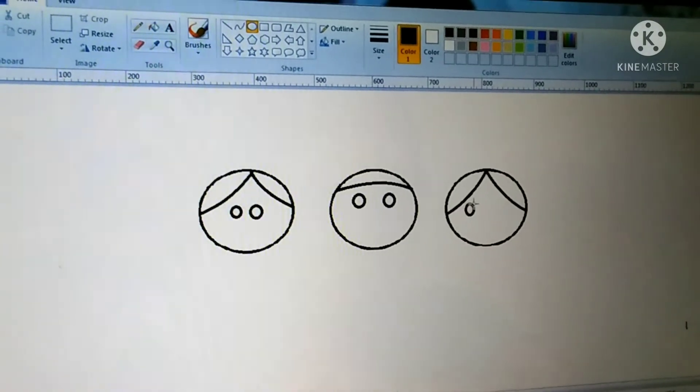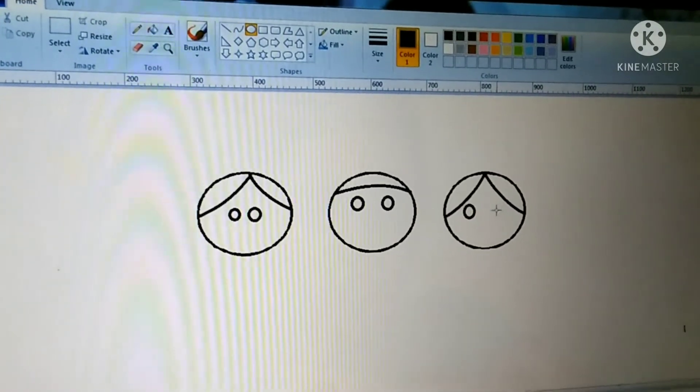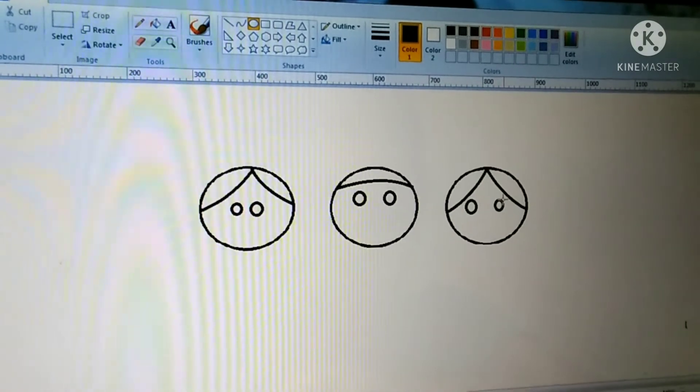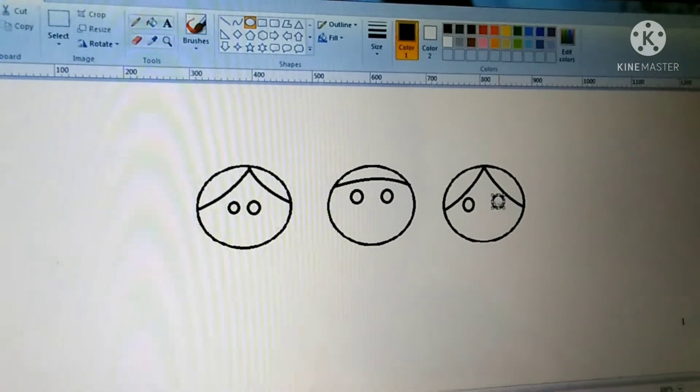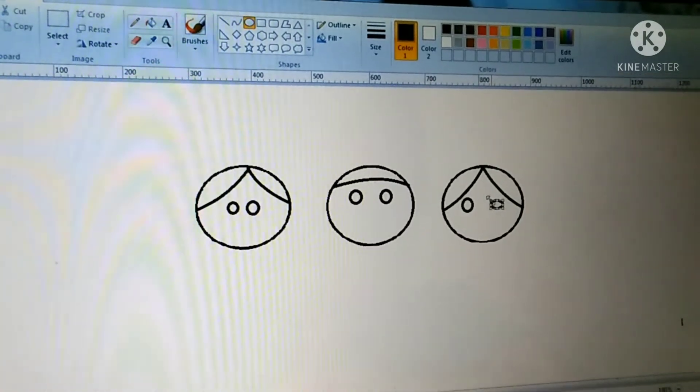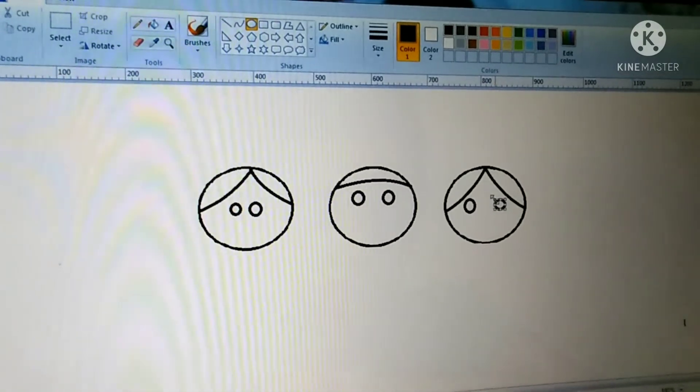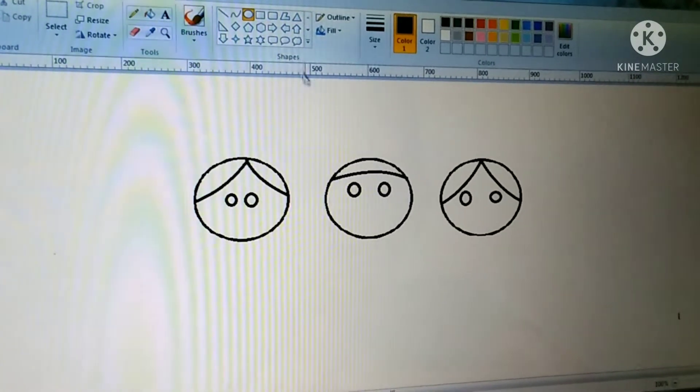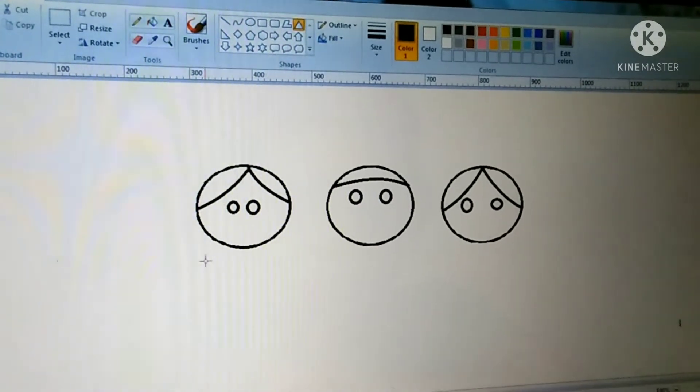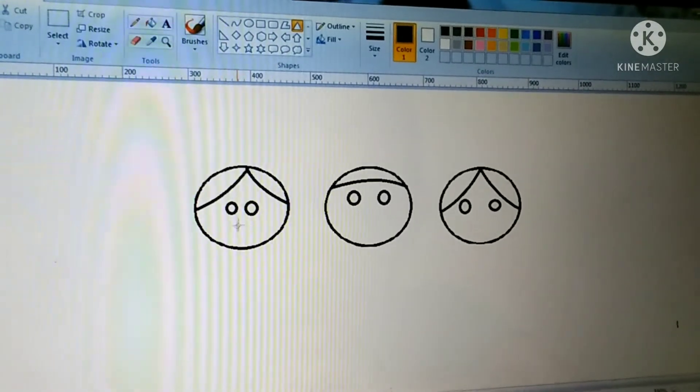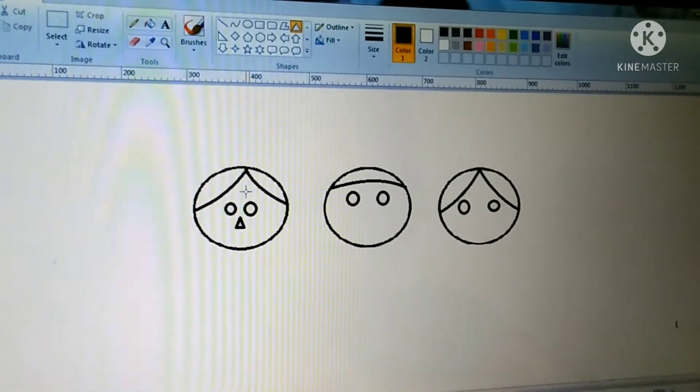Now fill it or here. Now the nose, take triangle, put a small nose.